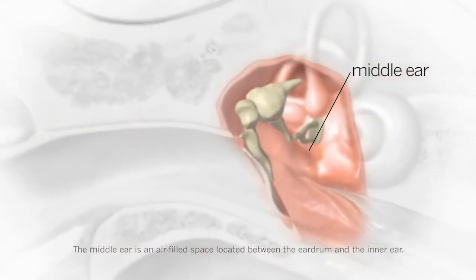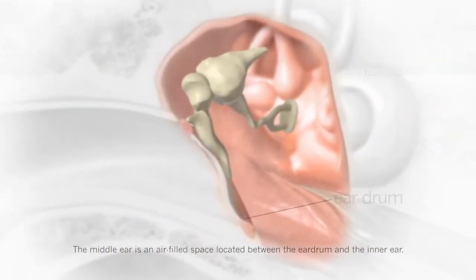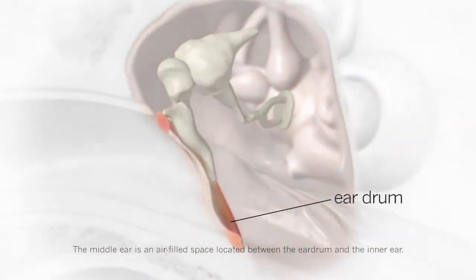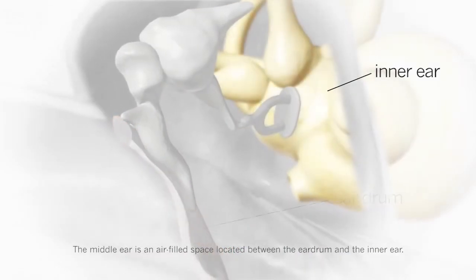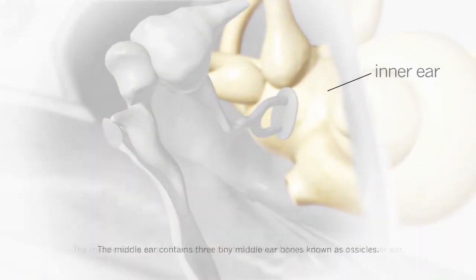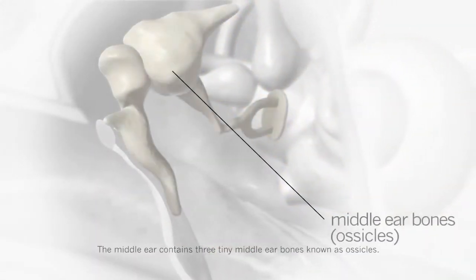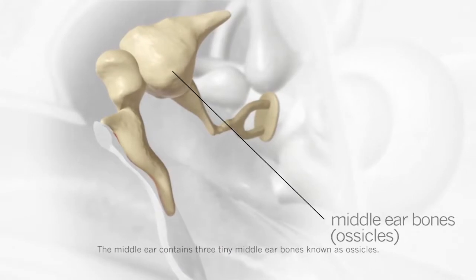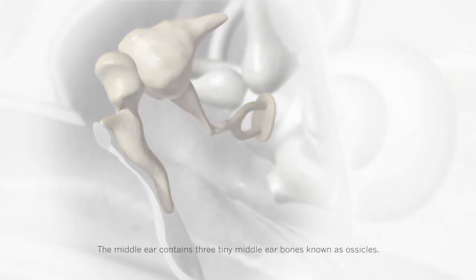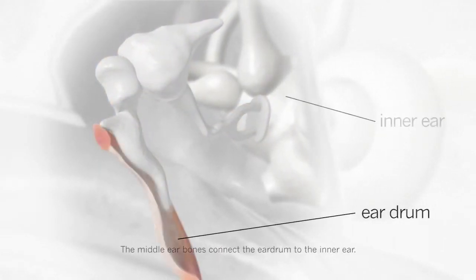The middle ear is an air-filled space located between the eardrum and the inner ear. The middle ear contains three tiny middle ear bones known as ossicles. The middle ear bones connect the eardrum to the inner ear.